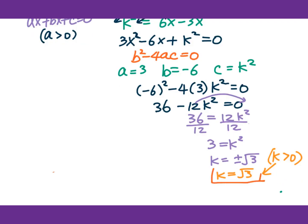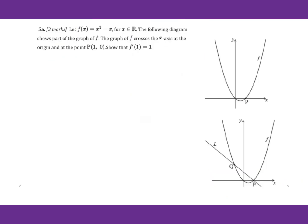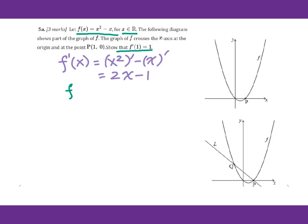Problem 5a: Let f of x equals x squared minus x for real numbers. The graph crosses the x-axis at the origin and at point P(1, 0). Show that f prime of 1 equals 1. We find f prime of x: derivative of x squared minus derivative of x gives 2x minus 1. So f prime of 1 equals 2 times 1 minus 1 equals 1. Proof complete.